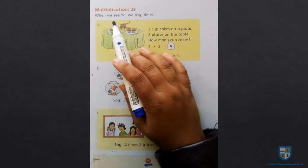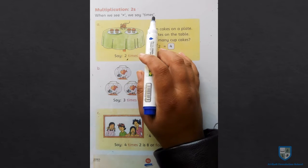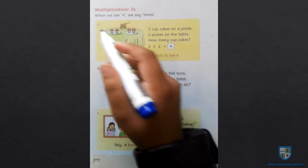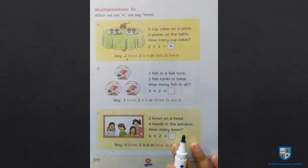Multiplication 2's. When we say multiply, we say times. Now we have A, B, and C which we have to solve.